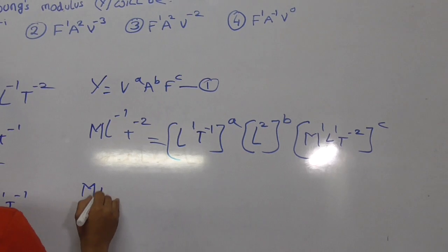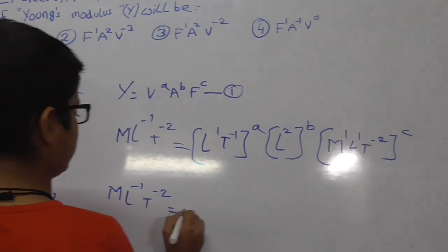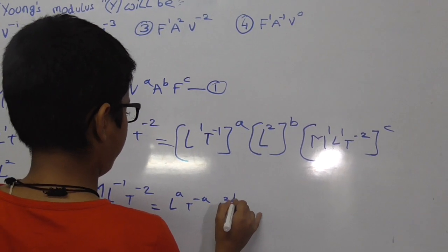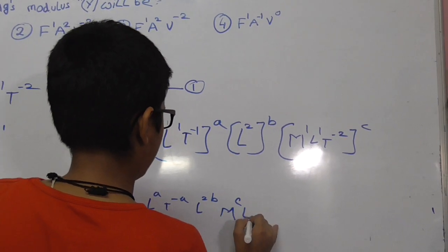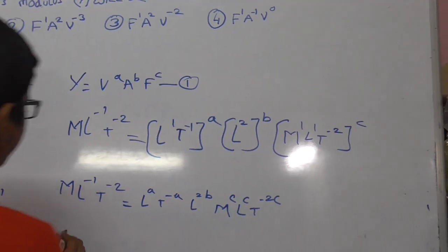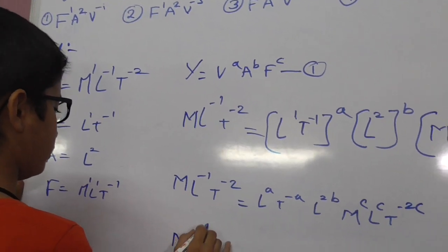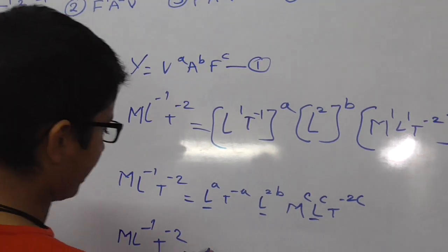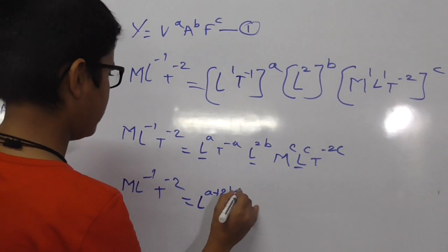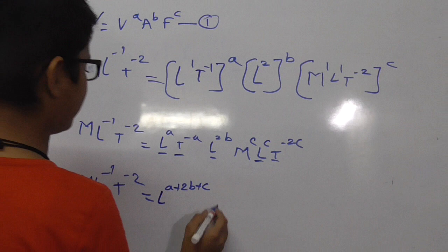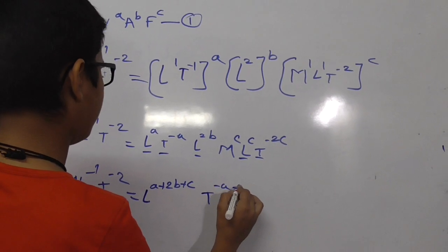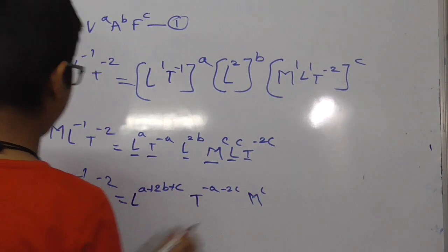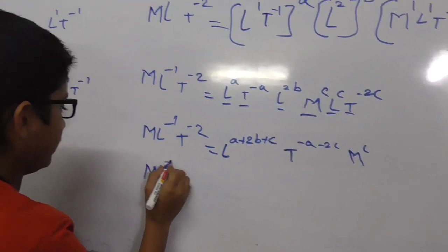So now M L power minus 1, T power minus 2 is equal to L power A, T power minus A, L power 2B, M power C, L power C, T power minus 2C. Combining terms: M L power minus 1, T power minus 2 is equal to M power C, L power A plus 2B plus C, T power minus A minus 2C.